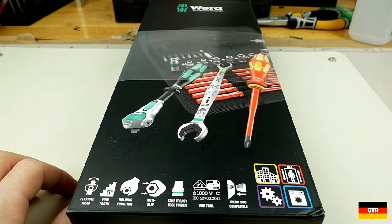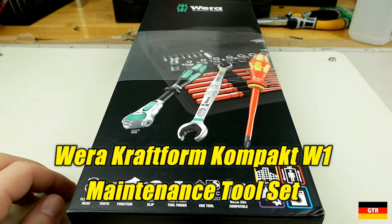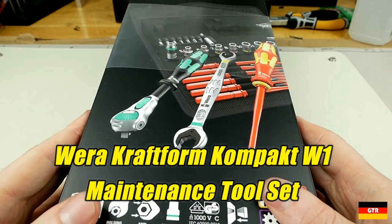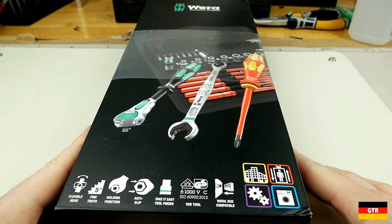Welcome everyone to German Tool Reviews. Today we have the Vera Craftform Compact W1 Maintenance Toolset with part number 135926.